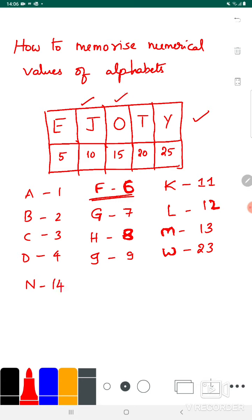O is already done. Coming to P, if you invert P, it looks like a 6, so P is 16. F was already done as 6, so P is 16.